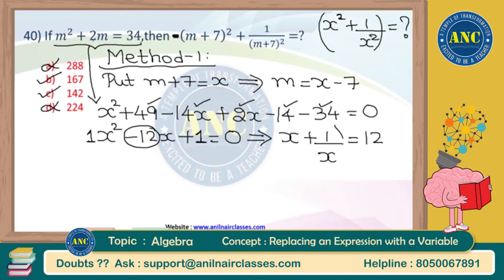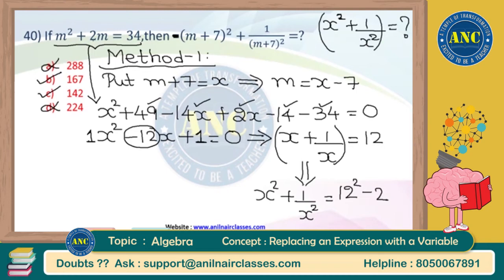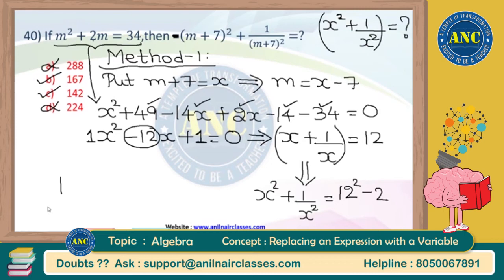The question asks for x² + 1/x², not x + 1/x. So x² + 1/x² = (x + 1/x)² - 2 = 12² - 2 = 144 - 2 = 142. The answer for this question is 142, confirming that 167 is not correct.